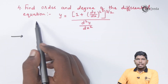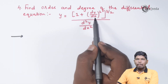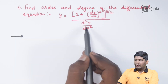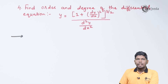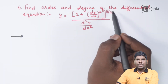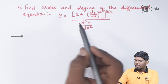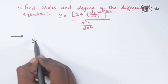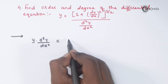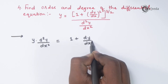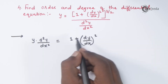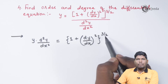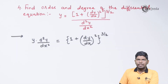Find the order and degree of the differential equation y = (1 + (dy/dx)²)^(3/2) / (d²y/dx²). First, let us eliminate the fractional power. We take d²y/dx² to the left hand side. Then, to eliminate the fractional power 3/2, we square both sides.